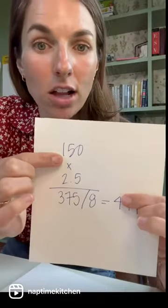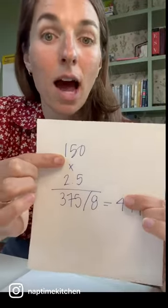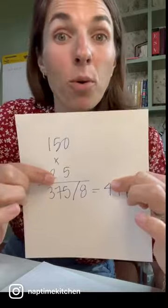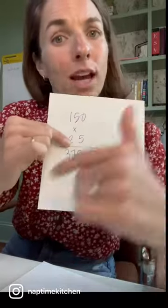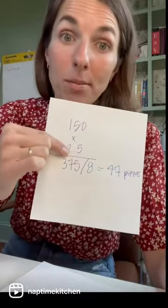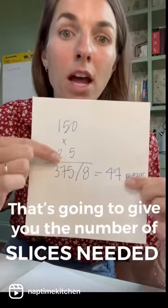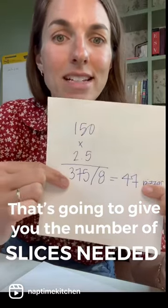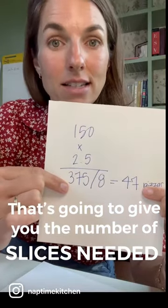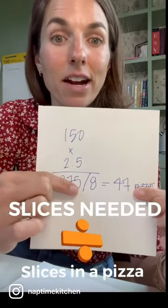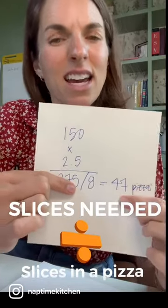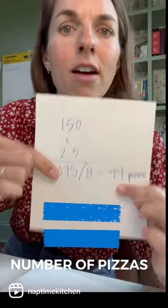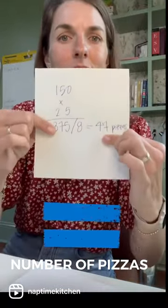Let's say I have 150 college students. I'm going to average that each one of them is having 2.5 slices, knowing some people are going to only have two and some people are going to have three. 150 times 2.5 is 375 slices. Divided by eight, that's about 46.8 — averaging 47 pizzas.